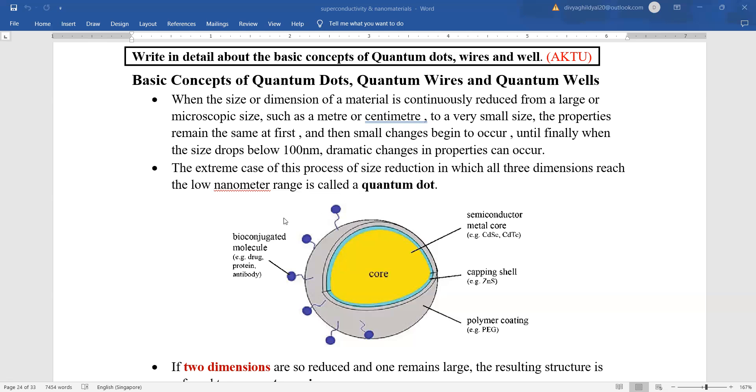So, the extreme case of this process of size reduction in which all three dimensions reach the lower nanometer range is known as a quantum dot.